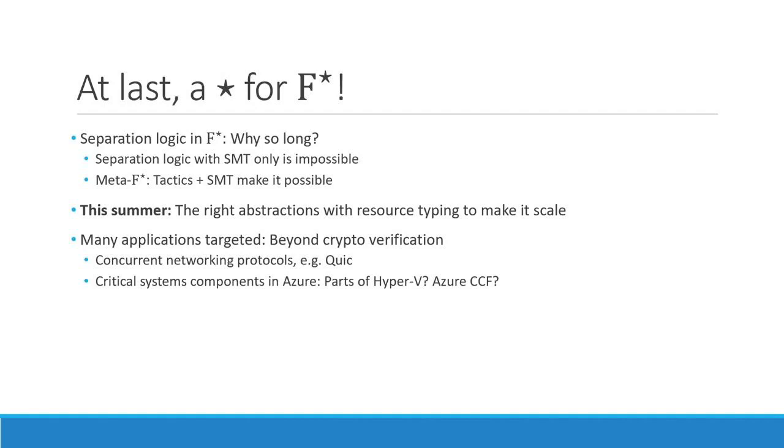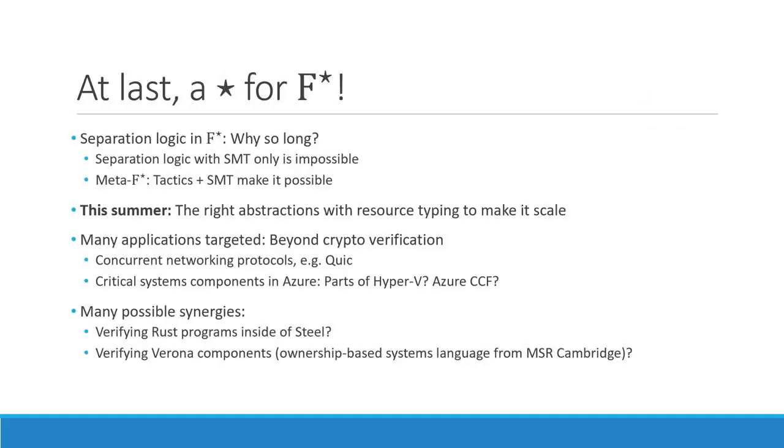Building upon that, we have many fascinating applications that could be targeted, and we can finally go beyond crypto verification. If we can verify concurrent programs, we might be able to verify concurrent network protocols such as QUIC. If we can scale up to bigger systems, we might be able to verify critical system components in Azure — there is some work with the Hyper-V people, and we might be able to verify some parts of Hyper-V or Azure CCF. We might also have synergies with other projects. Morally, we are fairly close to what Rust is doing, so maybe we could verify Rust programs inside Steel. There is also the Verona language being developed at Microsoft Research Cambridge, doing ownership-based systems programming, and it would be interesting to verify some of its components inside Steel.